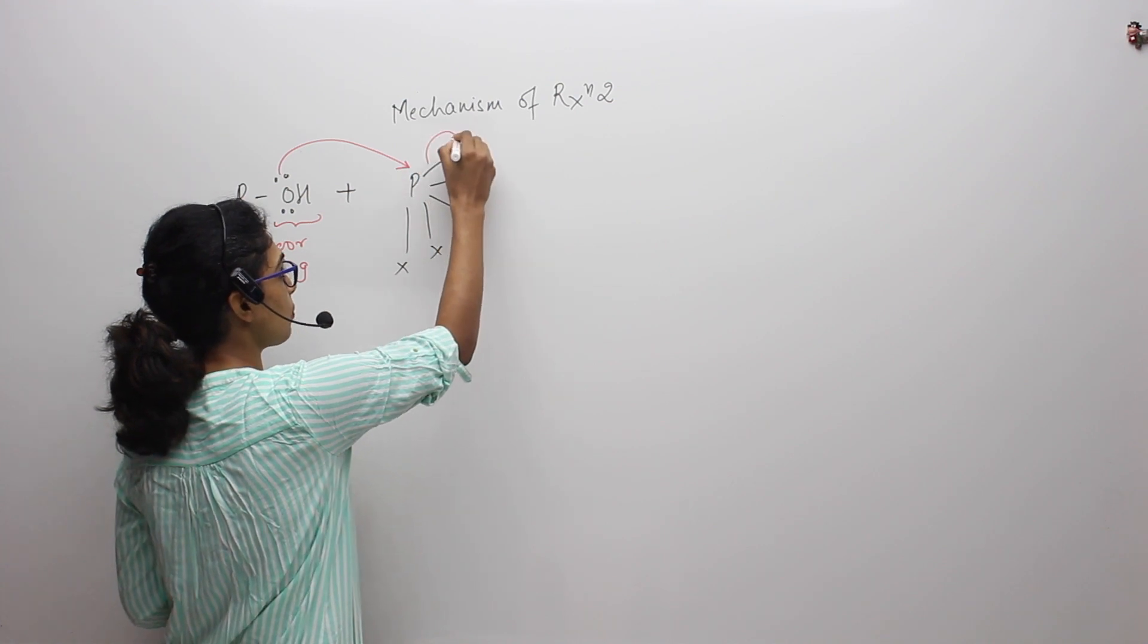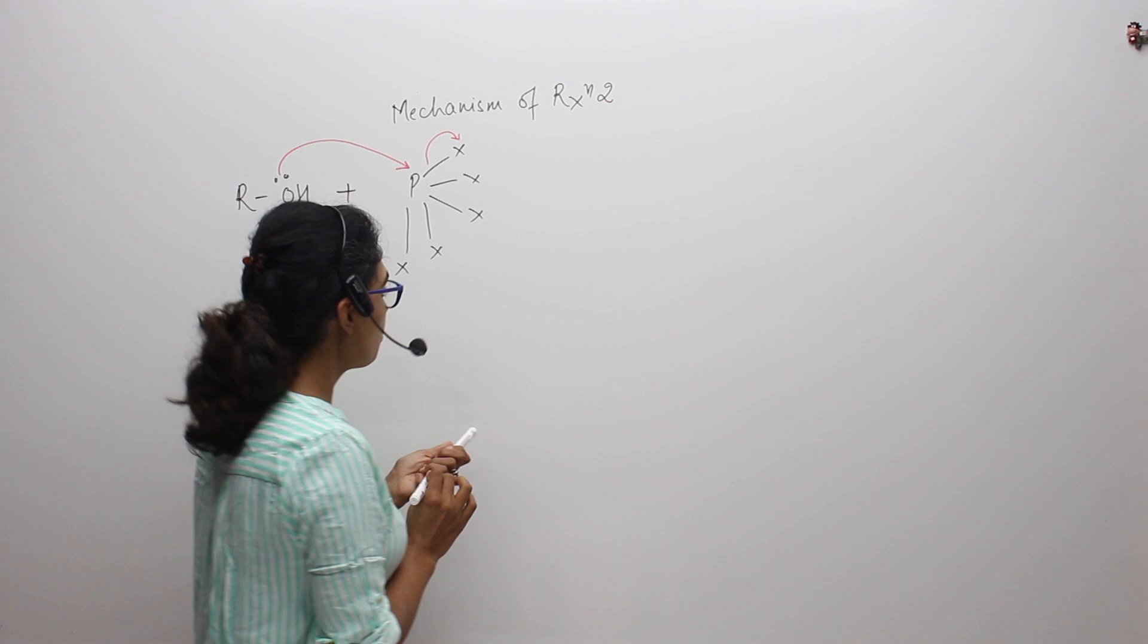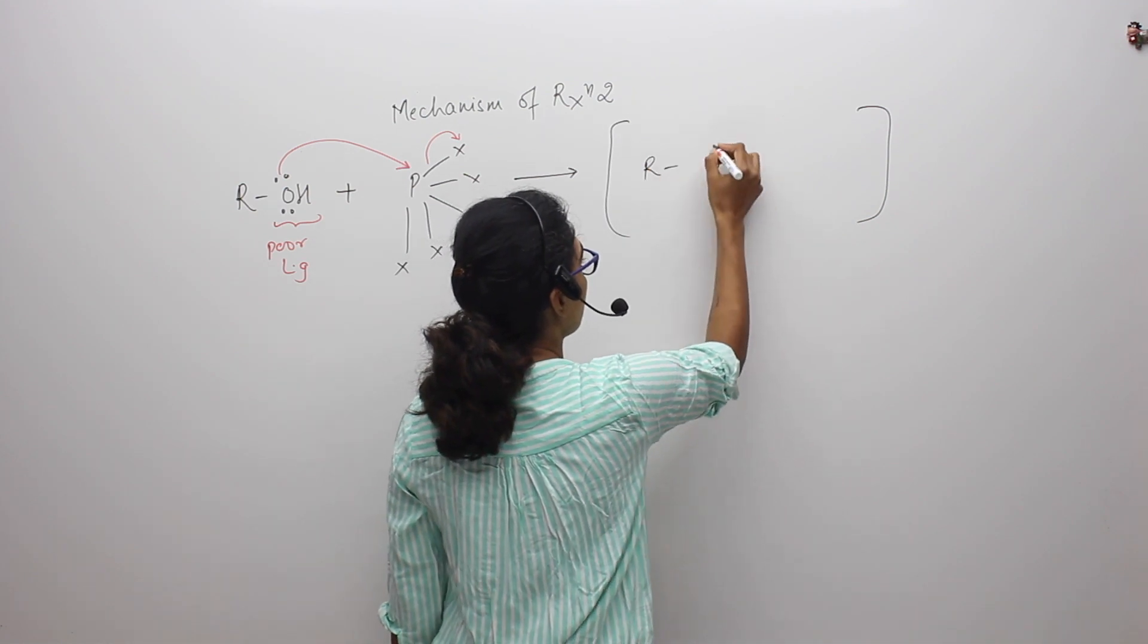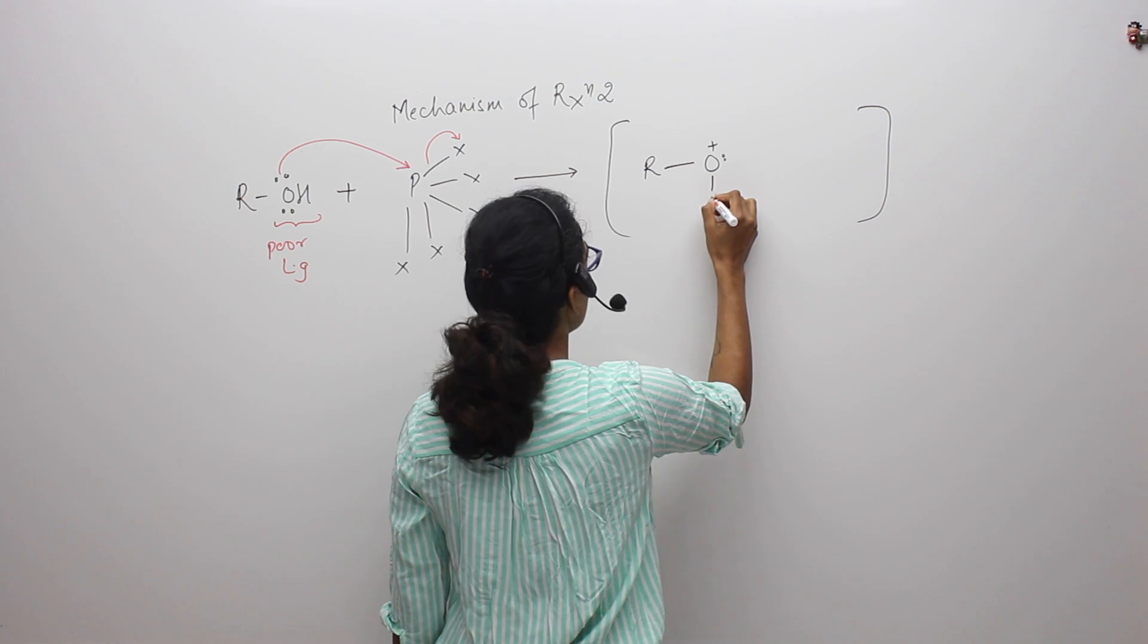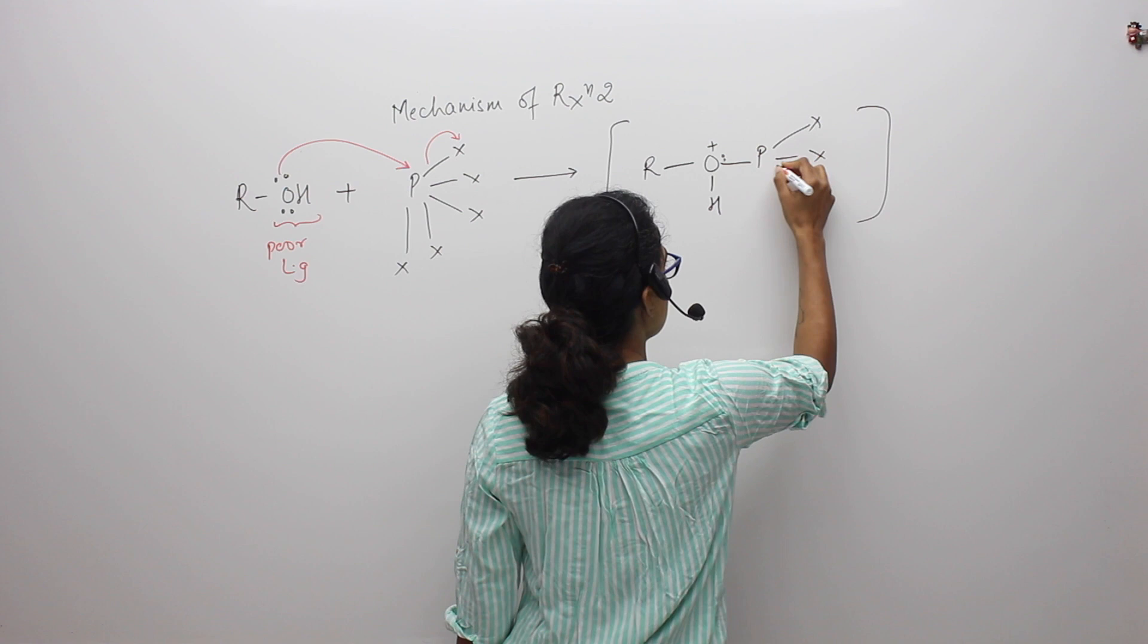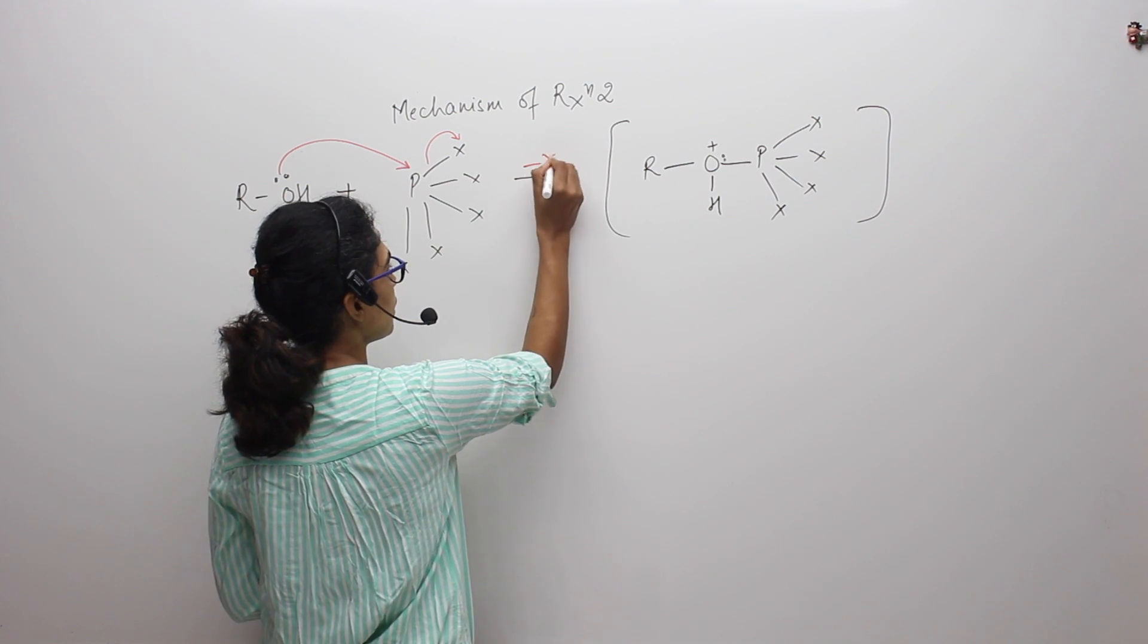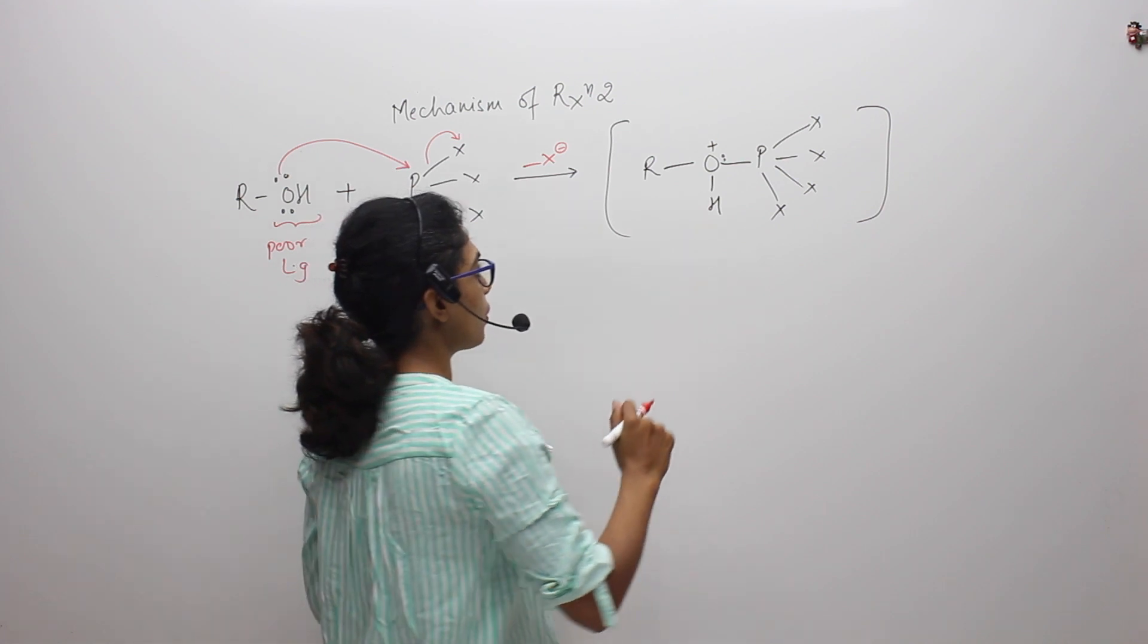So to form a new bond, phosphorus will have to break an existing bond. And in result, there will be a transition state which will be formed. R is getting a positive charge because it has given its pair of electrons to phosphorus to make a bond. Now earlier phosphorus had 5X and now it has lost 1X to form a new bond with oxygen and now has got 4X bonds.